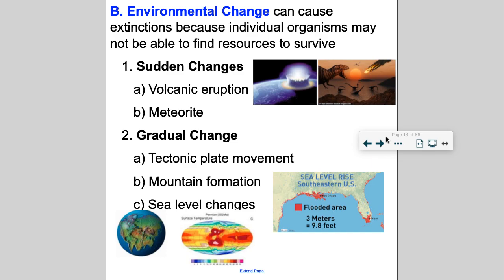Polar bears have to swim even further to find ice — further away from the mainland, towards the North Pole. But then they're so far from land that when the ice melts, they've got to swim even further. It's a terrible situation. So now you're seeing polar bears move further south, but that's where you encounter humans, and there's been a lot of interaction going on.